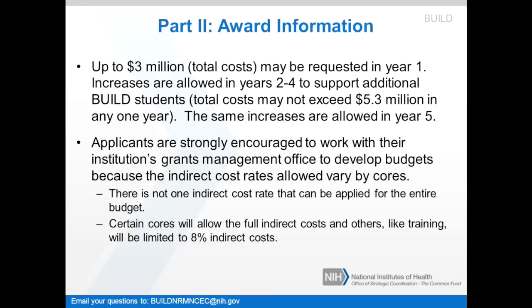Please note that there will be a notice published in the NIH guide to clarify the allowable increases. Applicants are strongly encouraged to work with their institution's grants management office to develop budgets because the indirect costs allowed vary by cores. There is not one indirect cost rate that can be applied for the entire budget. Certain cores will allow the full indirect costs and others, like training, will be limited to 8% indirect costs.